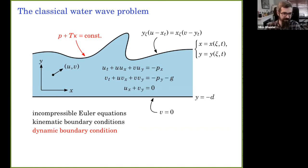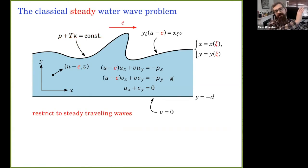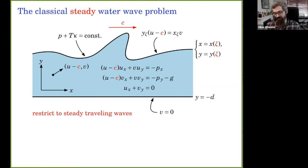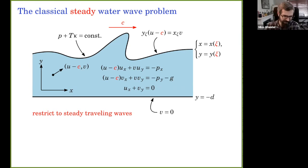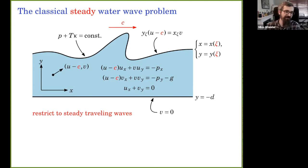That's the full time-dependent problem. Now I'm interested in the steady problem where the whole picture moves to the right with constant speed c. In this new reference frame I assume there's no more time dependence: the domain depends only on the surface parameter, and u, v, and p depend only on x and y. Where we used to have time derivatives, we now see minus c terms appearing everywhere. The domain is still unknown but at least it's fixed and not moving in time.